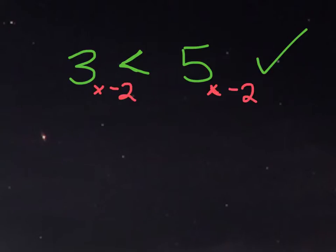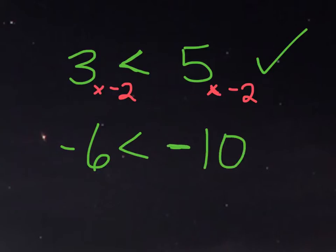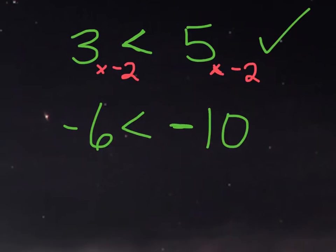Let's see what happens when I write this out. 3 times negative 2 would be negative 6, and 5 times negative 2 is negative 10. So let's think of this logically now. This is saying that negative 6 is less than negative 10.